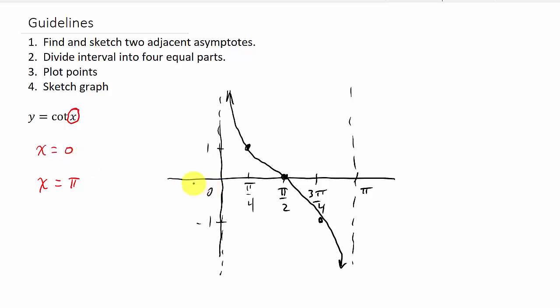And so then once you have your two adjacent asymptotes, in this case 0 to π, we split this interval into four equal regions. So what we did is we took 0 and π, and we found the midpoint, which is π over 2. And then we took the 0 and the π over 2, and found the midpoint there, π over 4. And we took the π over 2 and the π, and found the midpoint there, 3π over 4. And I'm going to show you all the work on how to do this as we're working the example.